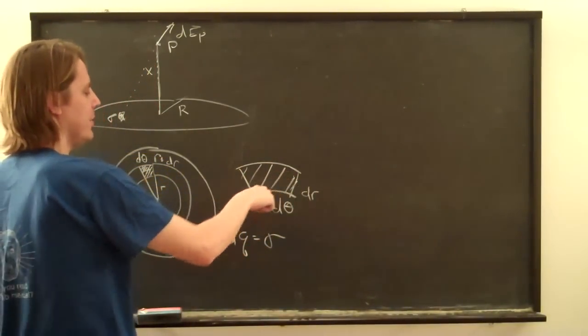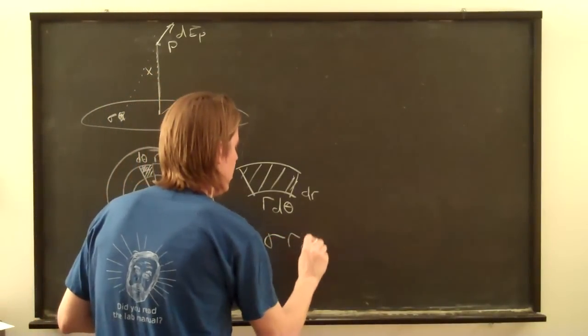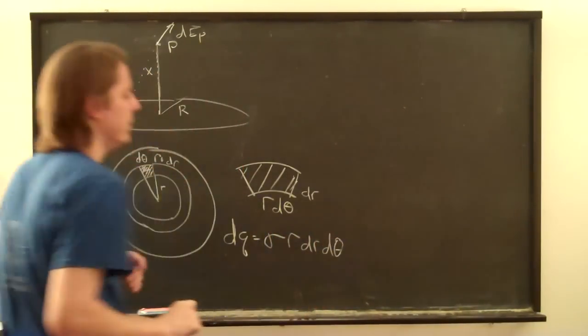So the little differential element of area is just R, DR, D theta. So this area, R, DR, D theta times sigma, is the charge DQ. R, DR, D theta.